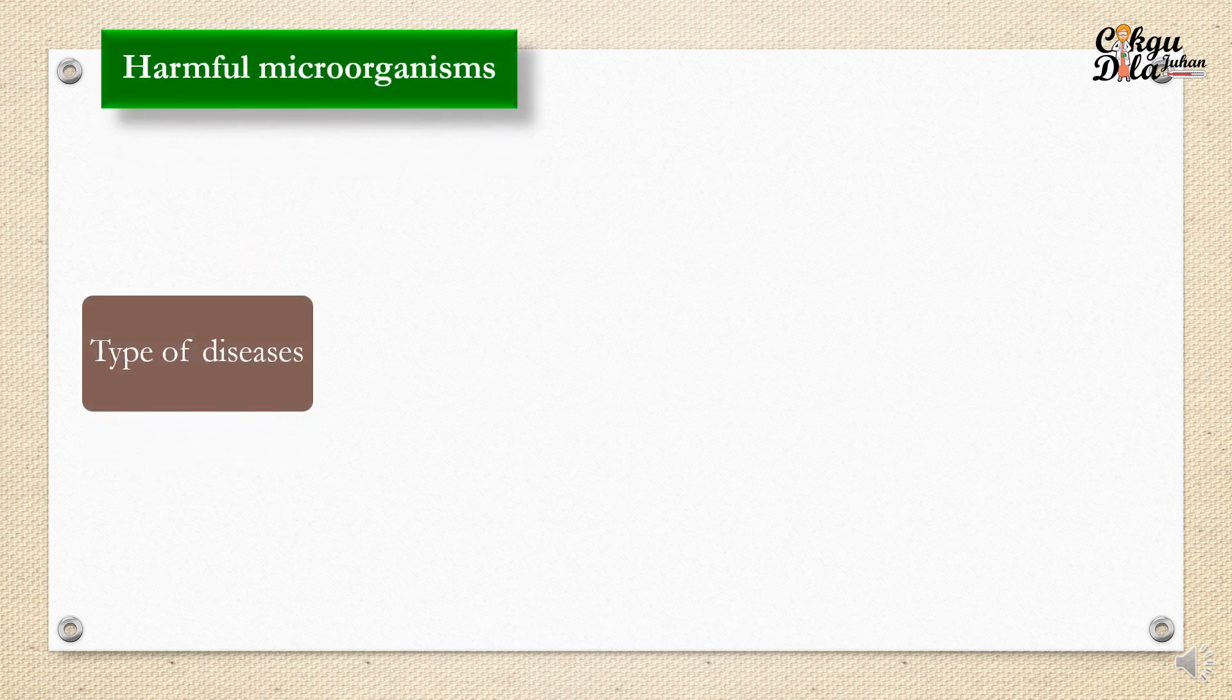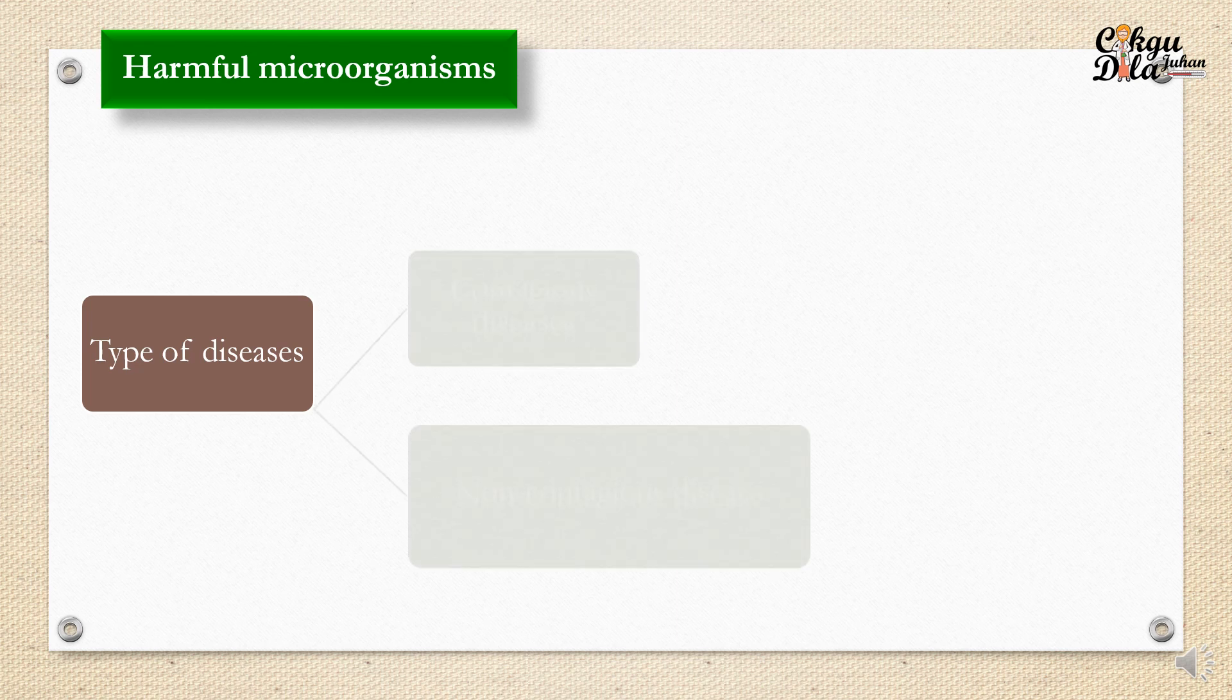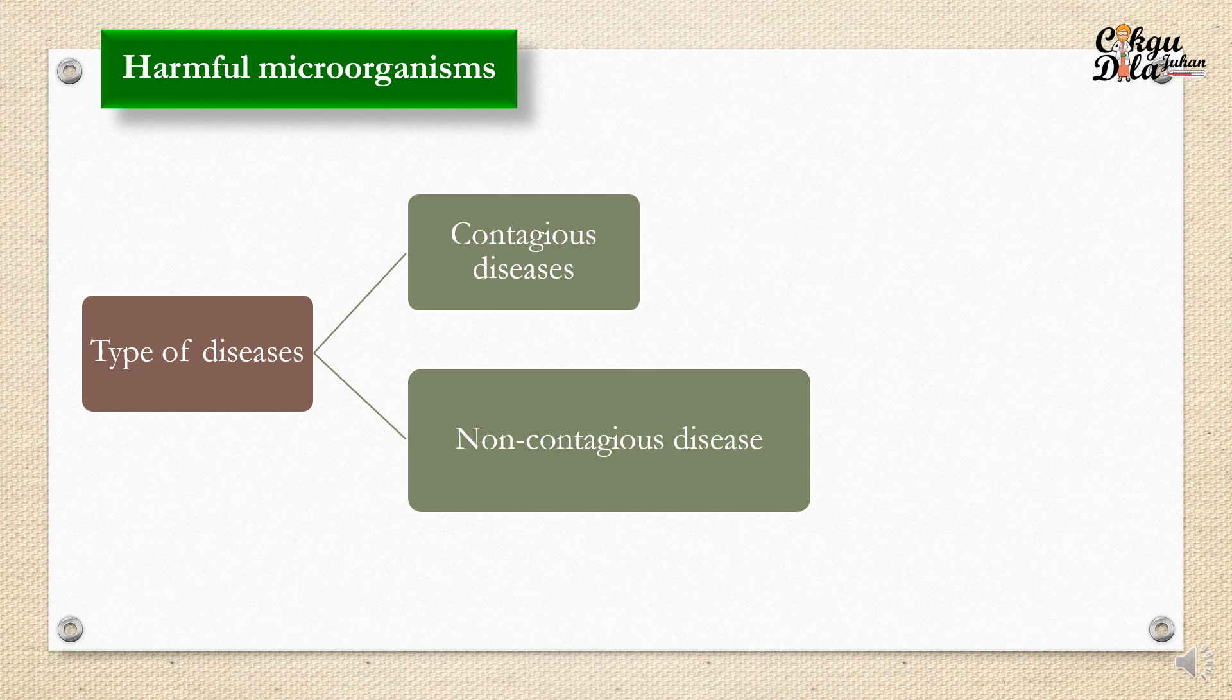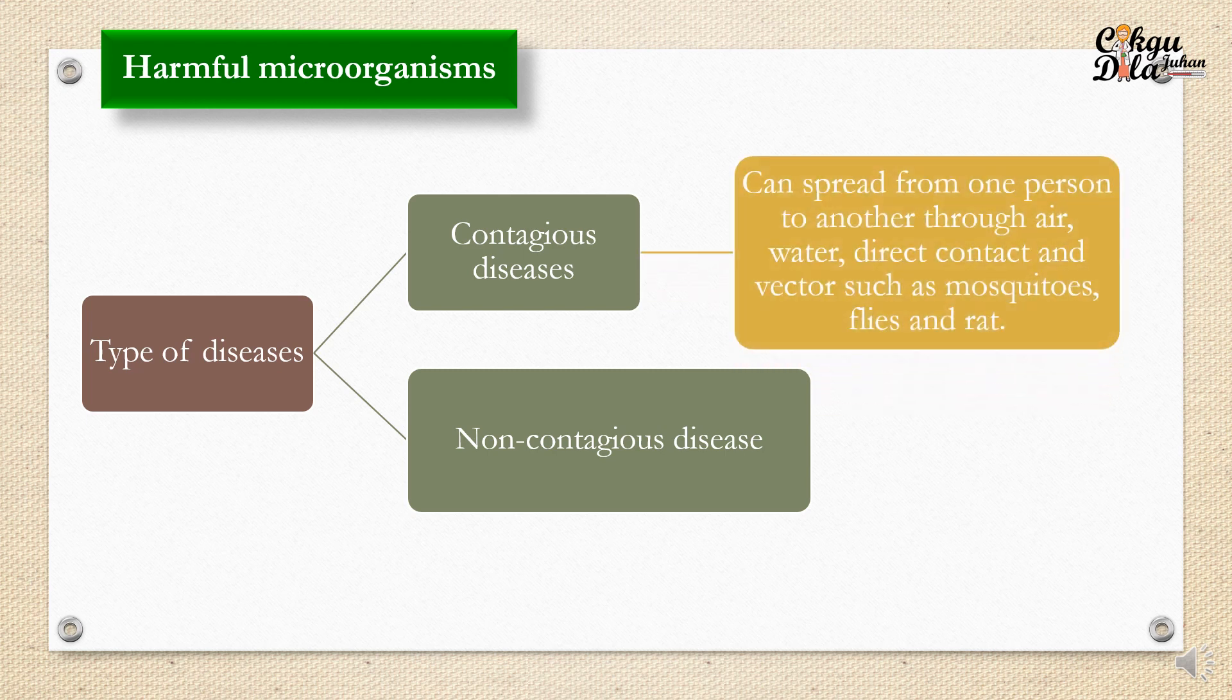Looking at the type of disease, disease can be divided into two: contagious disease and non-contagious disease. Contagious disease is a disease that can spread from one person to another through air, water, direct contact and vectors such as mosquitoes, flies and rats. So it is important for us to take care of our health and hygiene because some diseases can spread through air, water, and direct contact, for example like COVID-19. Some say it can spread to another through air. That's why we need to wear masks.